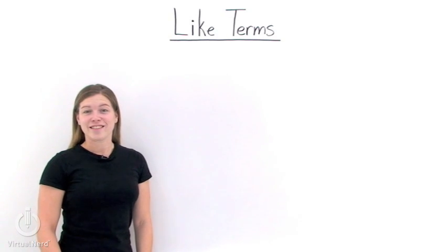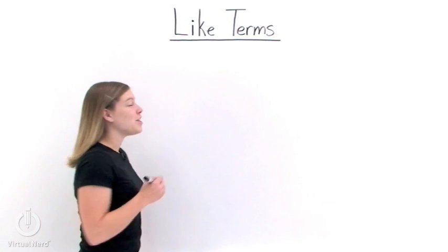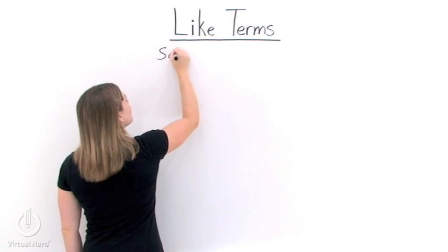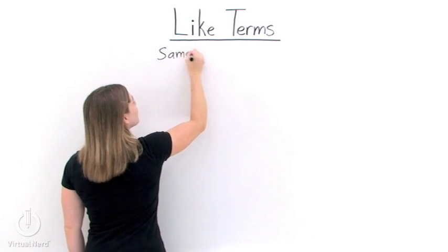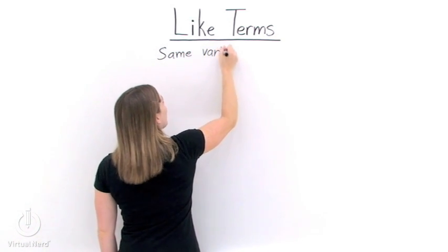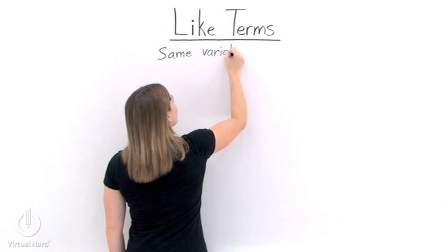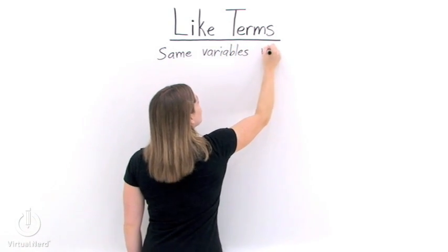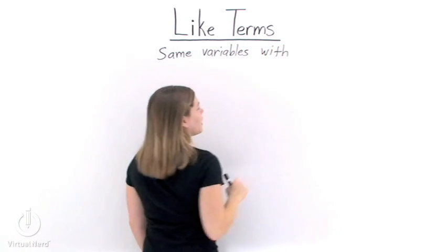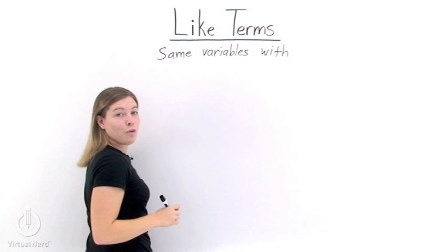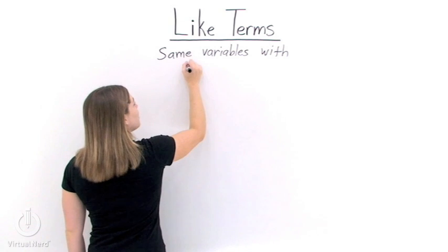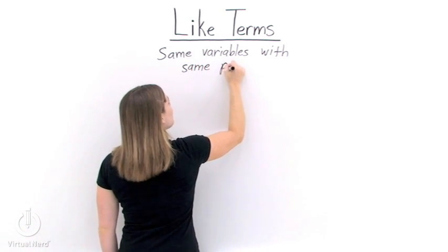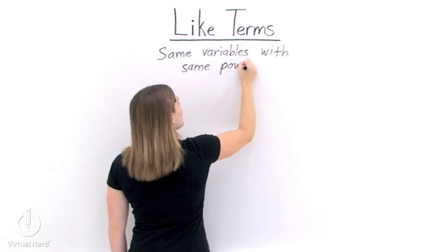What are like terms? Like terms are terms that contain the same variables raised to the same power. With like terms, it doesn't matter what the coefficient is. All we're concerned with is having the same variables raised to the same power or degree.